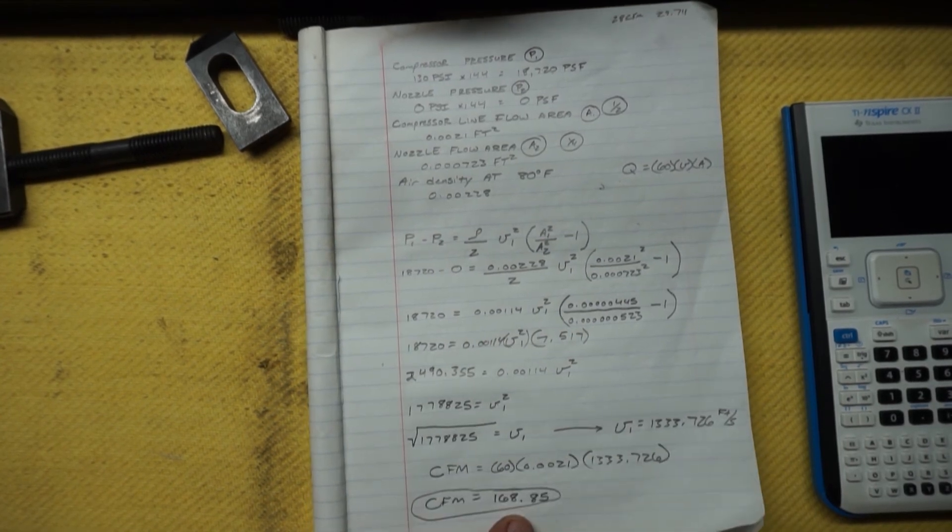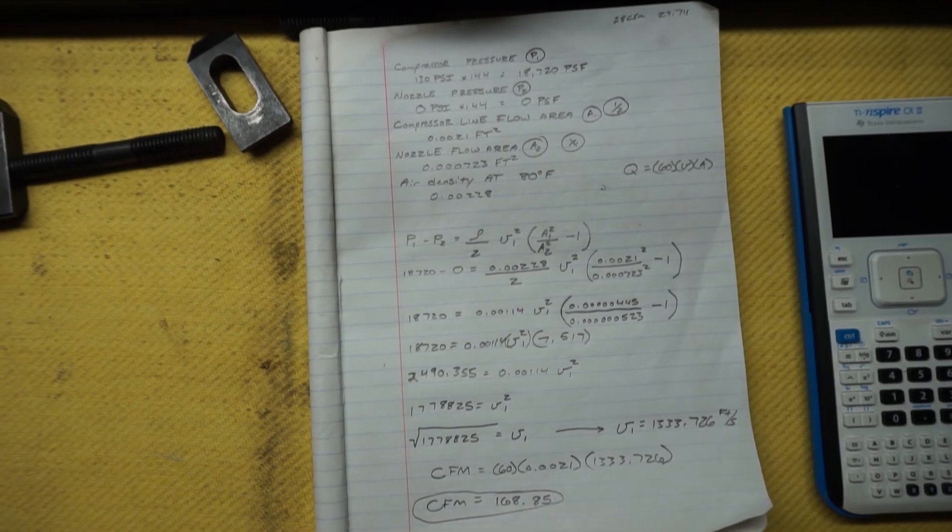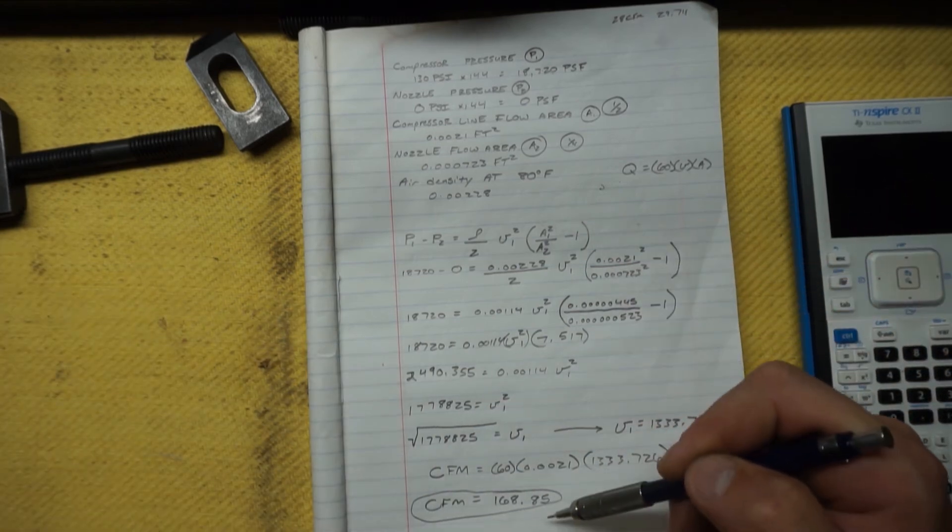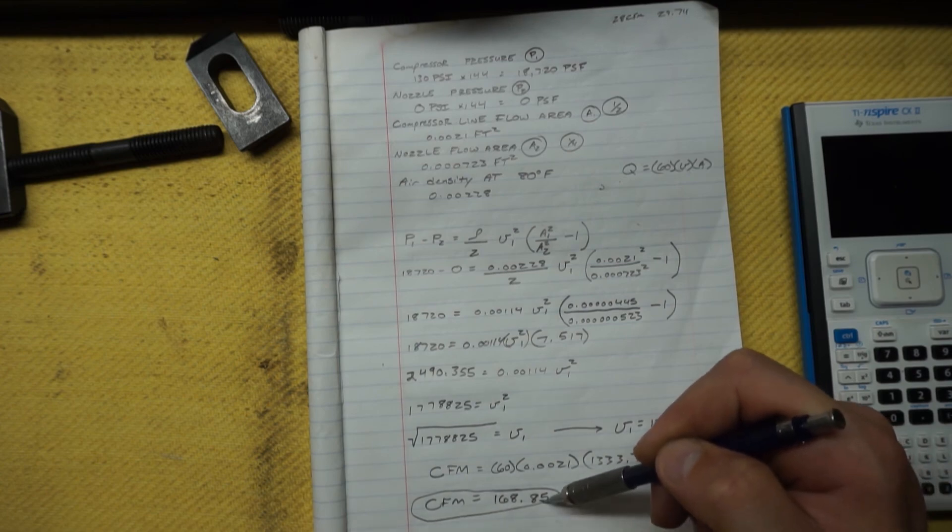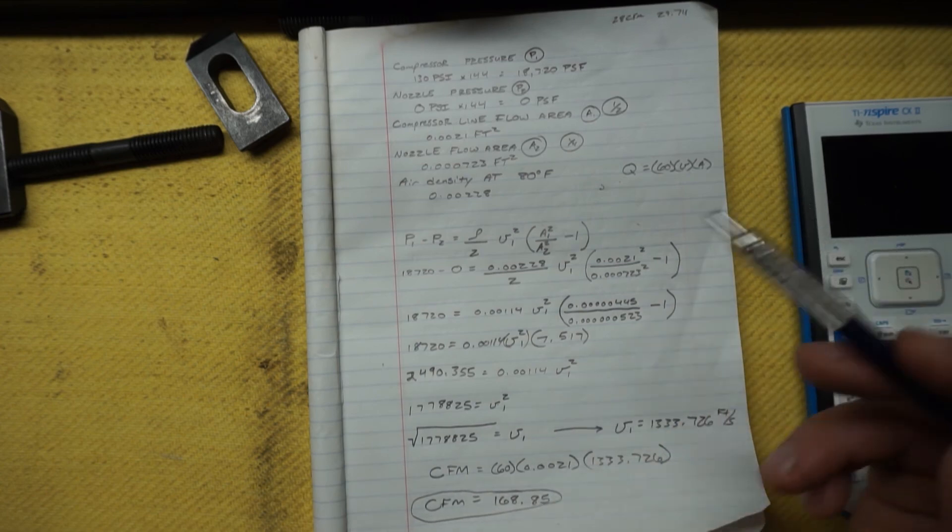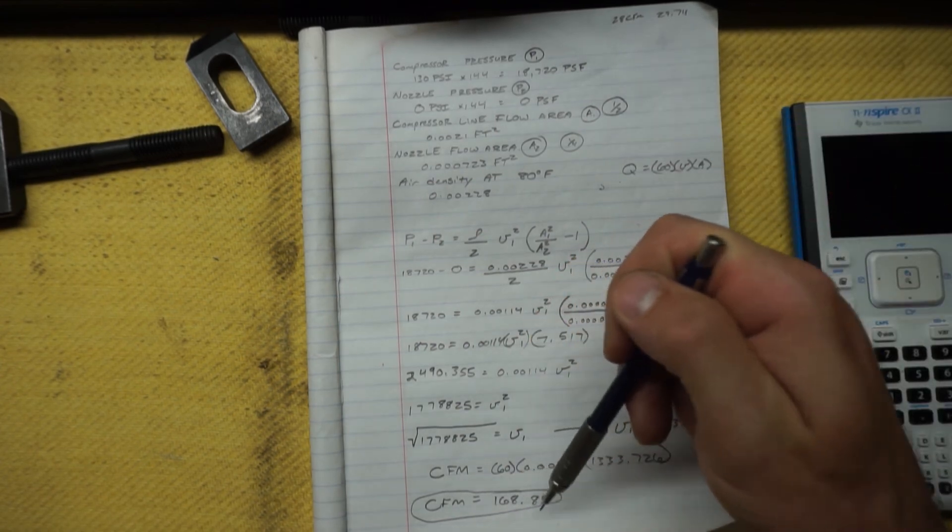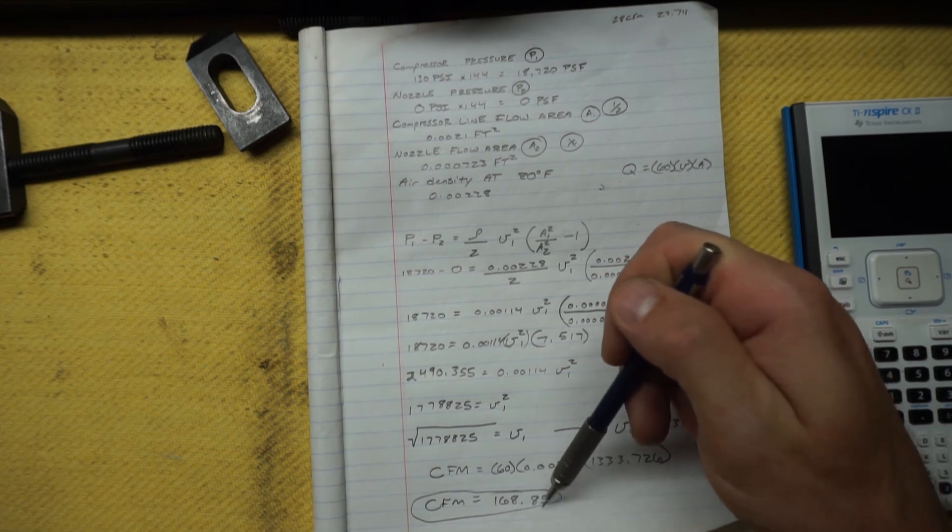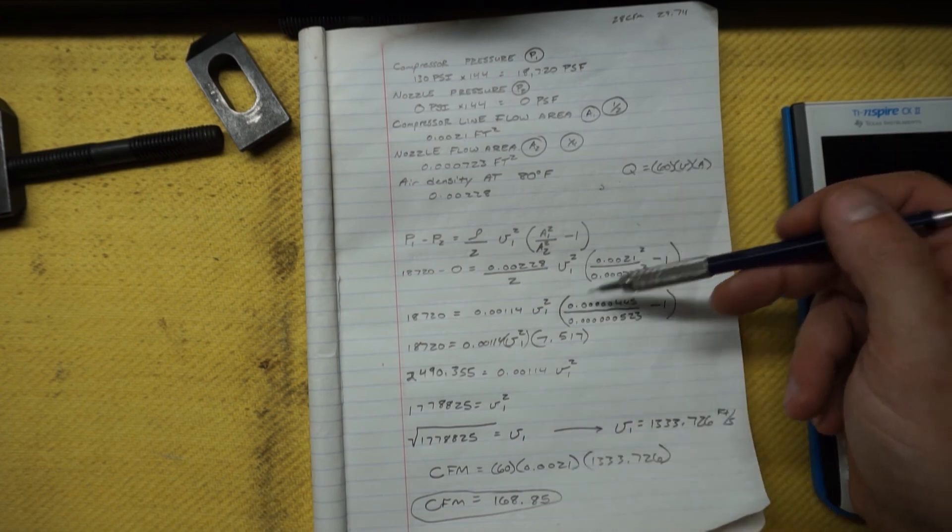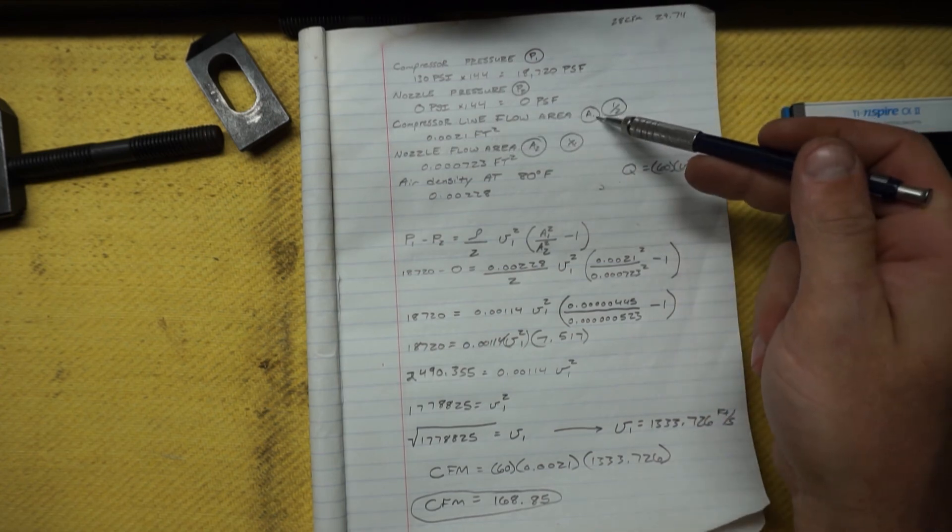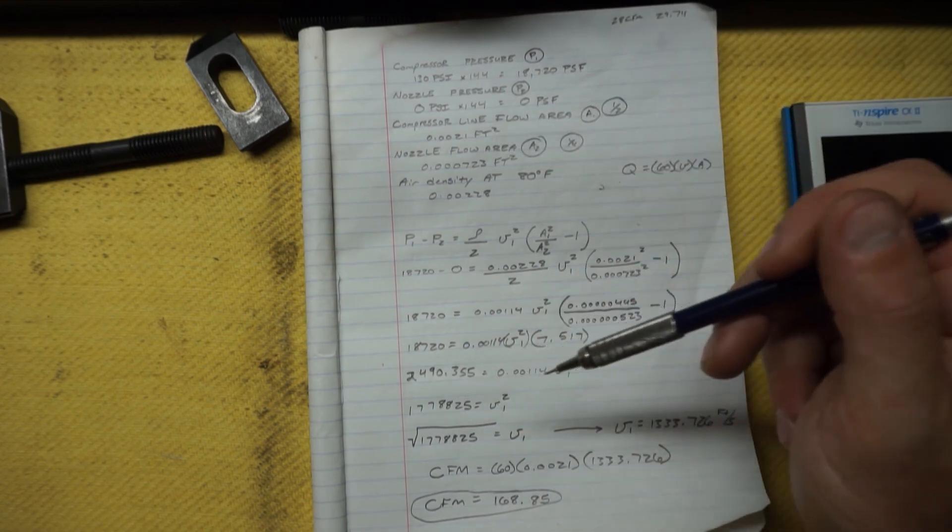Now if you have multiple items, what you would do is you would do all this math, you get the CFM. This is for the quarter inch. Now what I'll do, let's say if we have another spray gun that's another quarter inch, we don't add them together and then just say it's half inch. We do the quarter inch and then we would double this. So that would be 336 something, 337 CFM. Now if there's another one, it's an eighth inch line, you would do that inside diameter, do all this math using the same compressor A1, and then you would add it to that 337 that you just got.